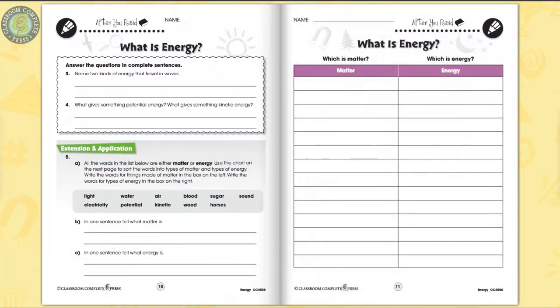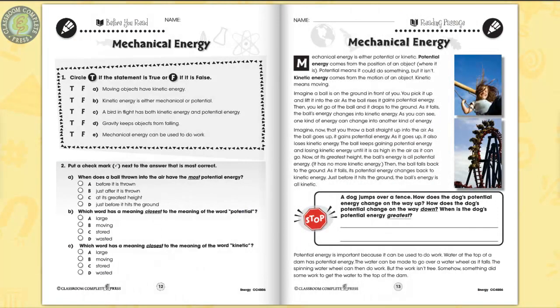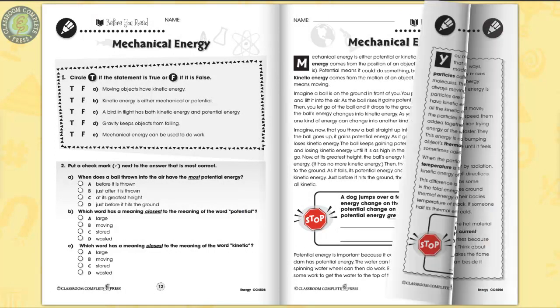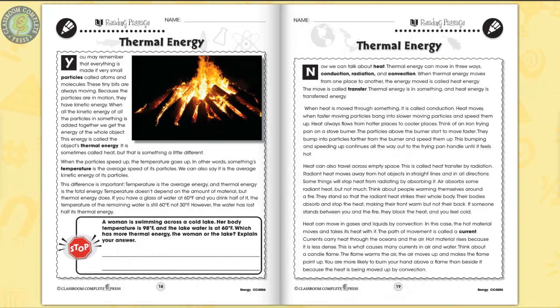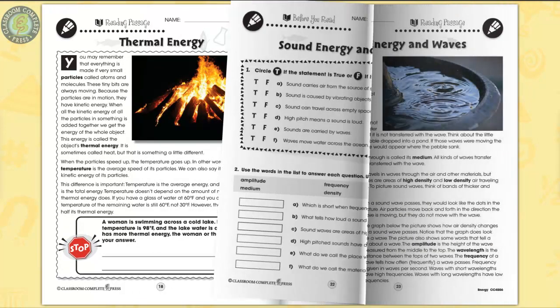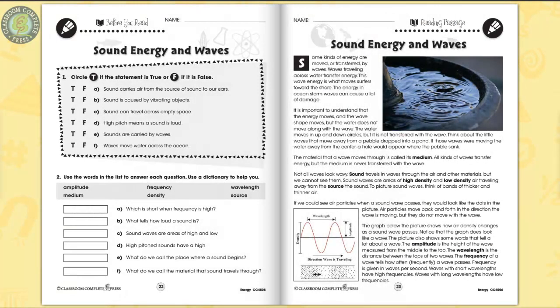Learn about all the different kinds of energy. Dissect mechanical energy by identifying the different points on a roller coaster as using kinetic or potential energy. The reading passage is where you'll find all the curriculum content. Find out how an object's thermal energy is calculated from its kinetic energy.